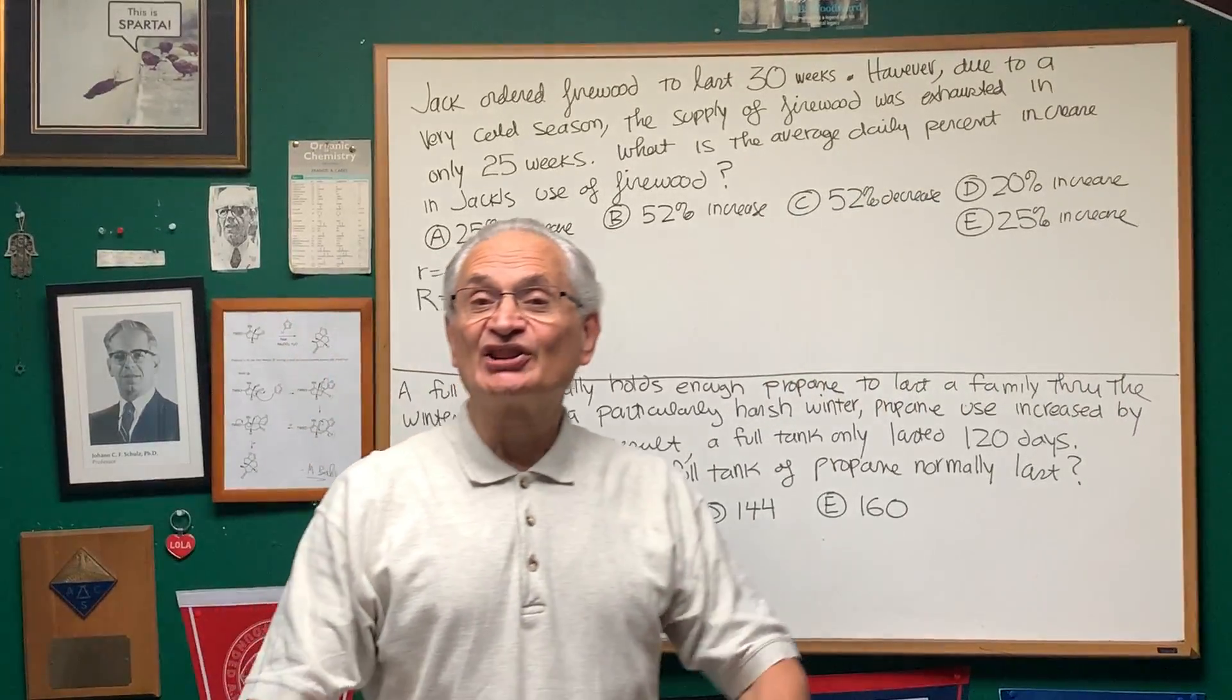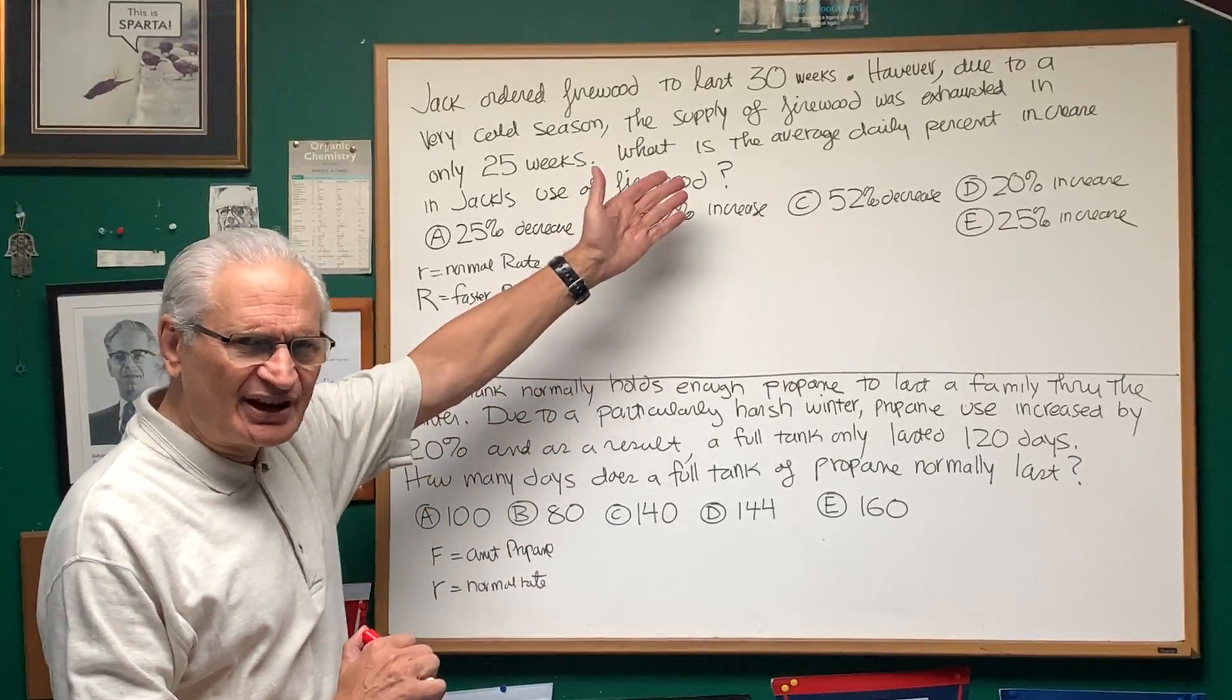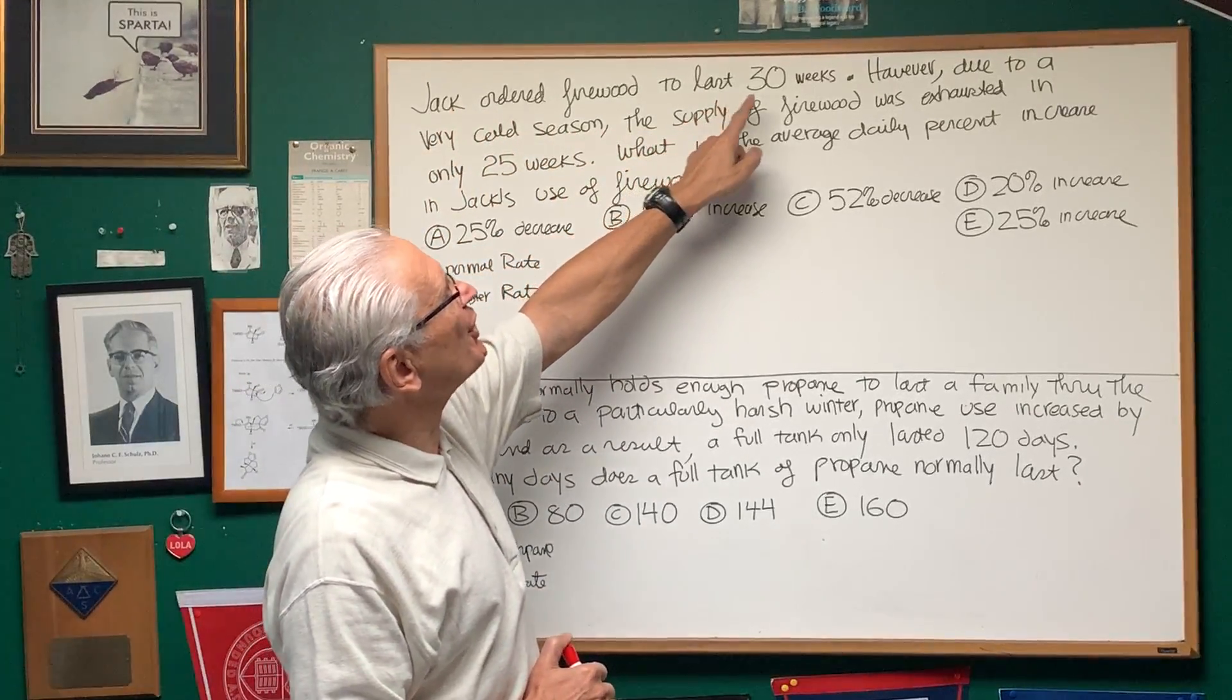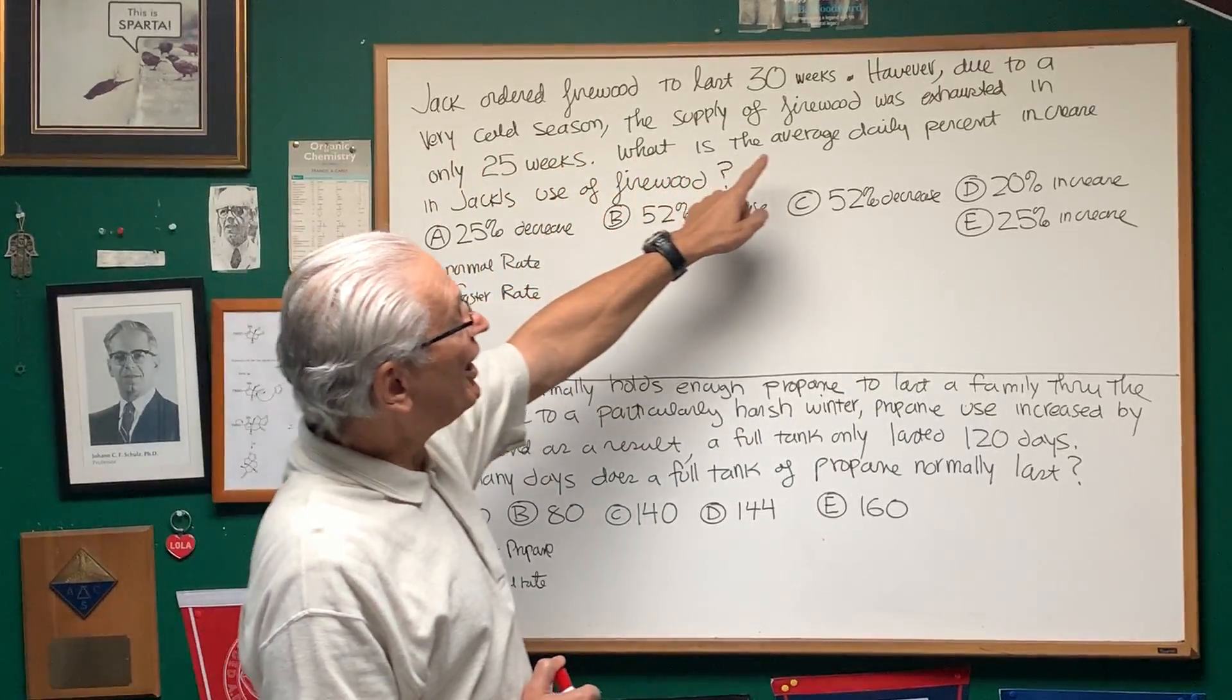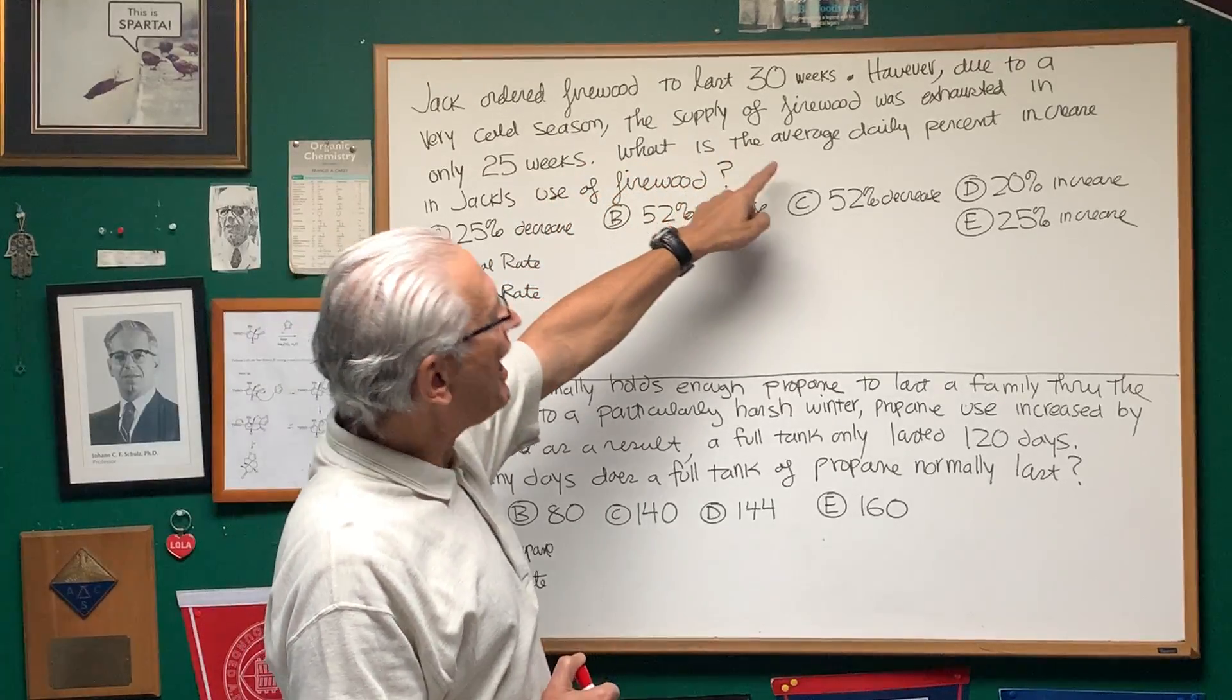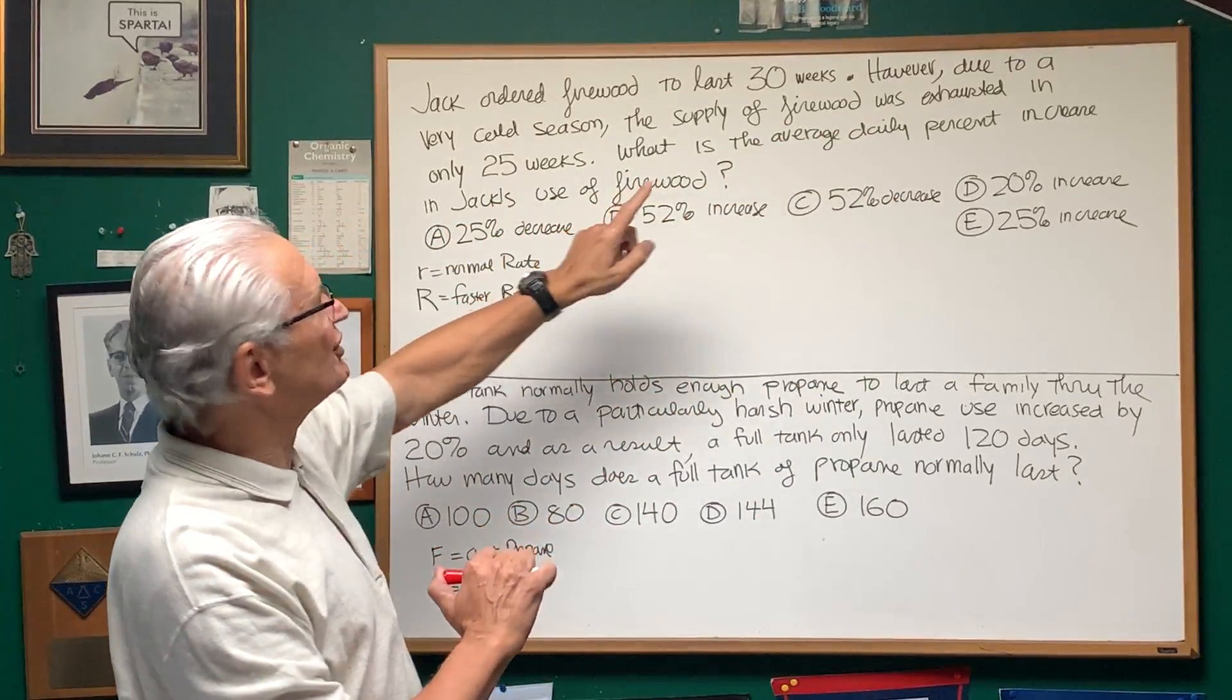Okay, thanks very much. Today we're going to do a couple of rate of consumption problems. Let's take a look at the problem and read it together. Jack ordered firewood to last 30 weeks. However, due to a very cold season, the supply of firewood was exhausted in only 25 weeks. What is the average percentage increase in Jack's use of firewood?